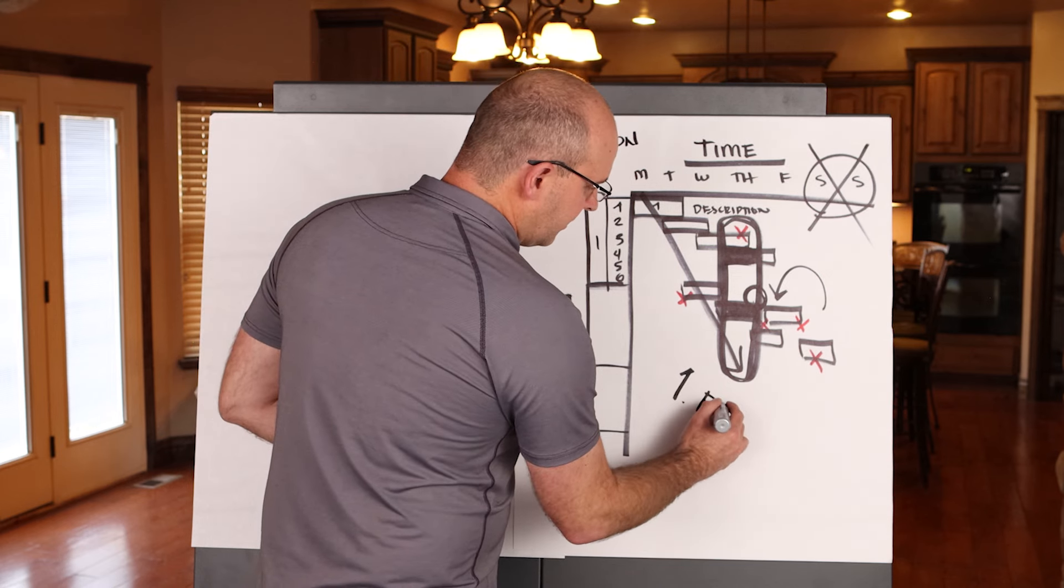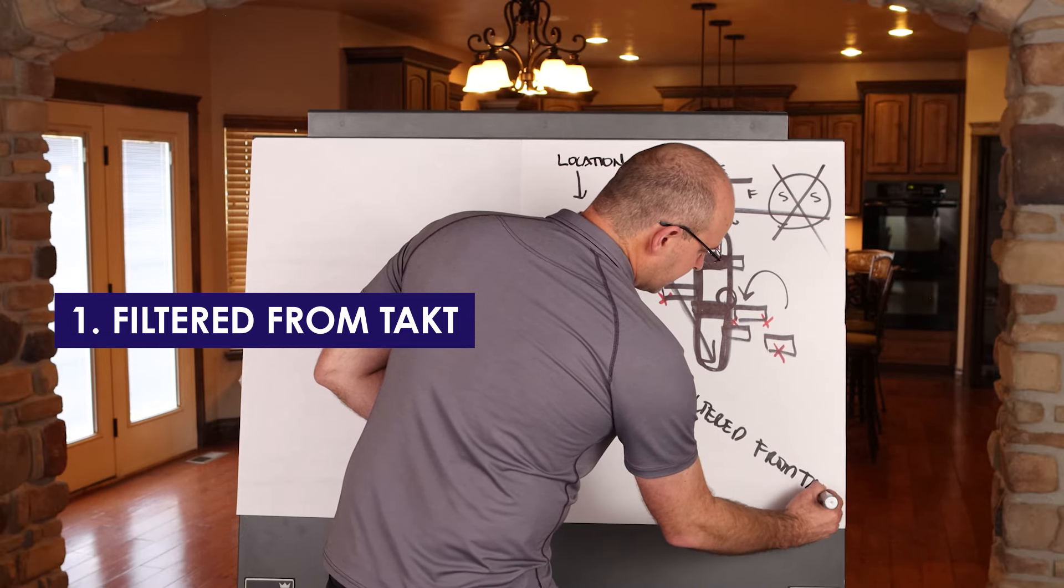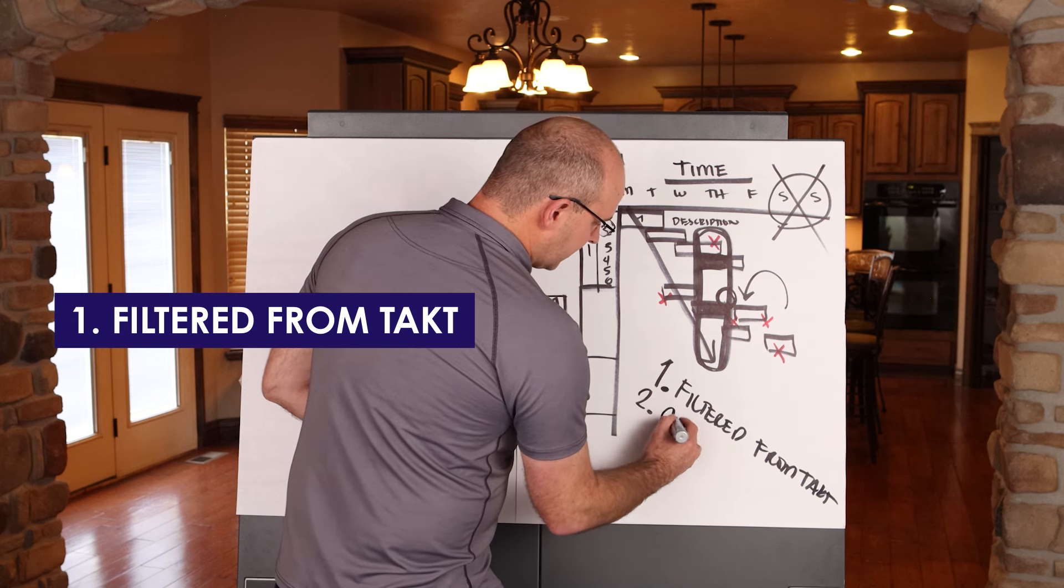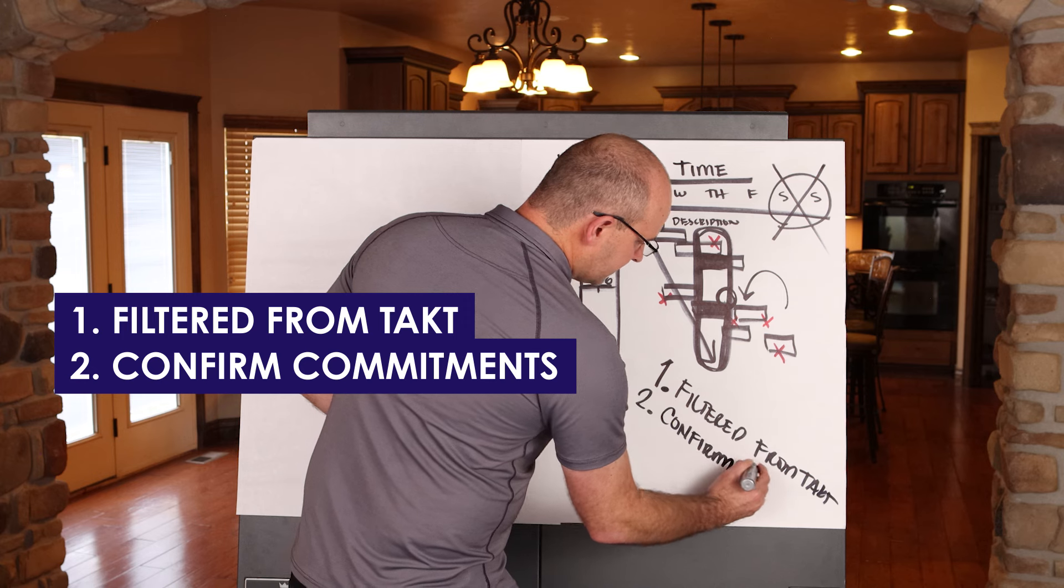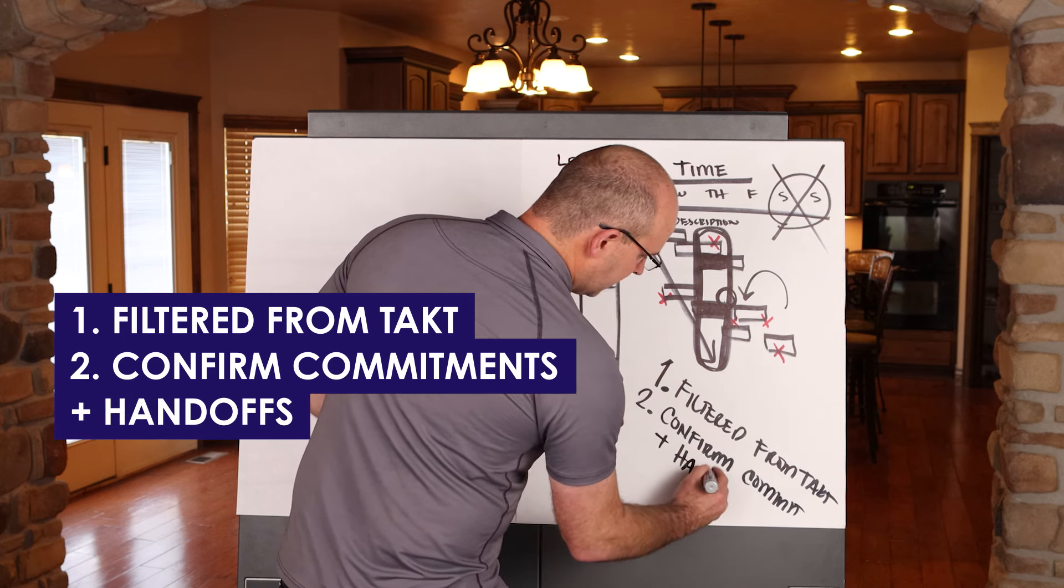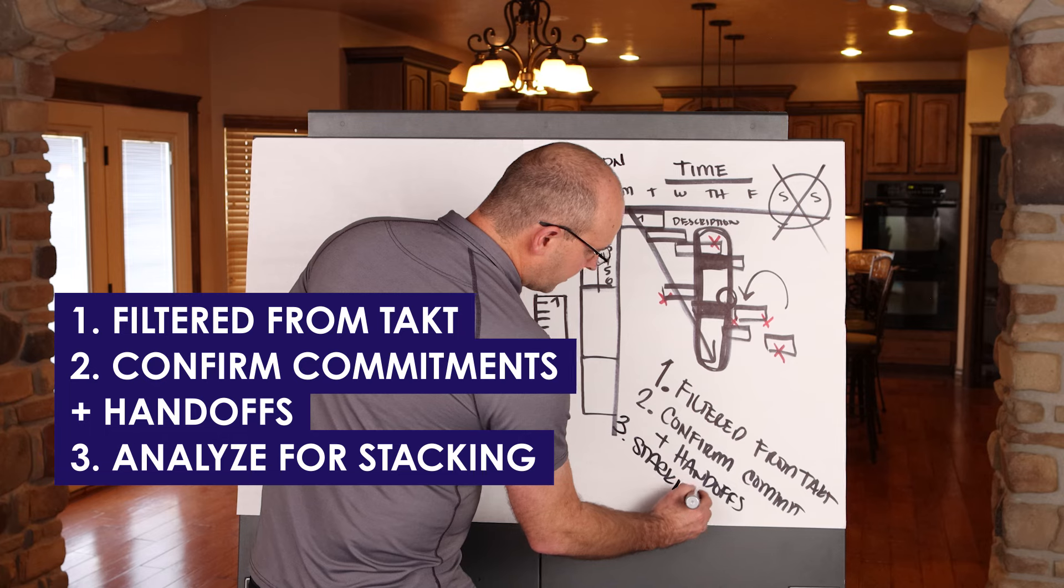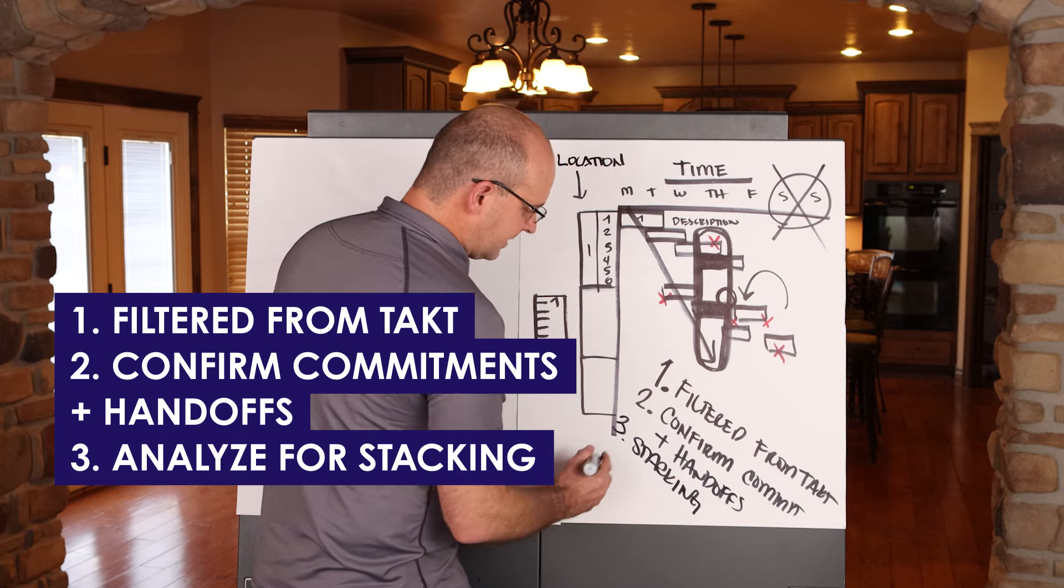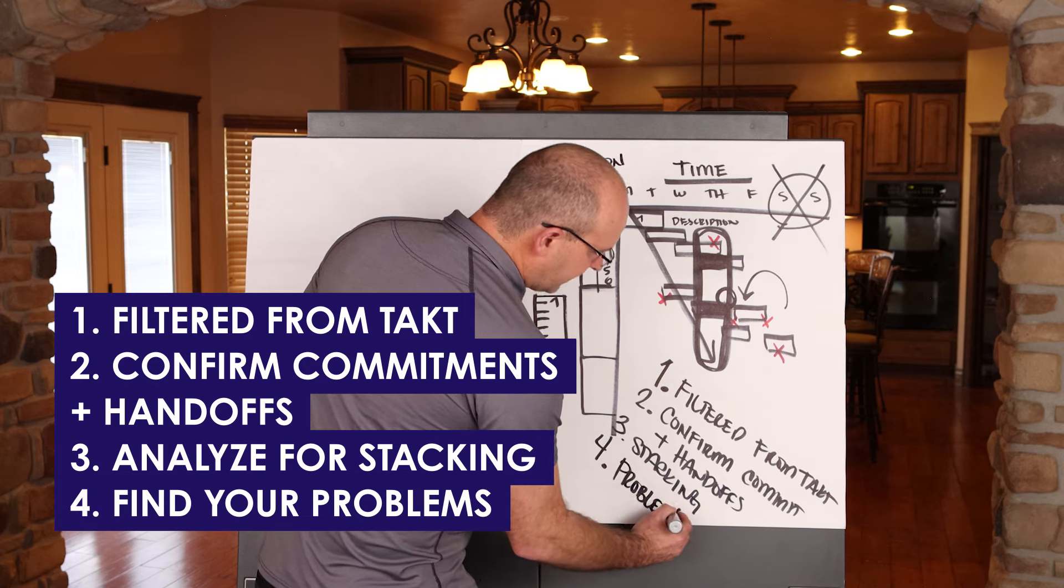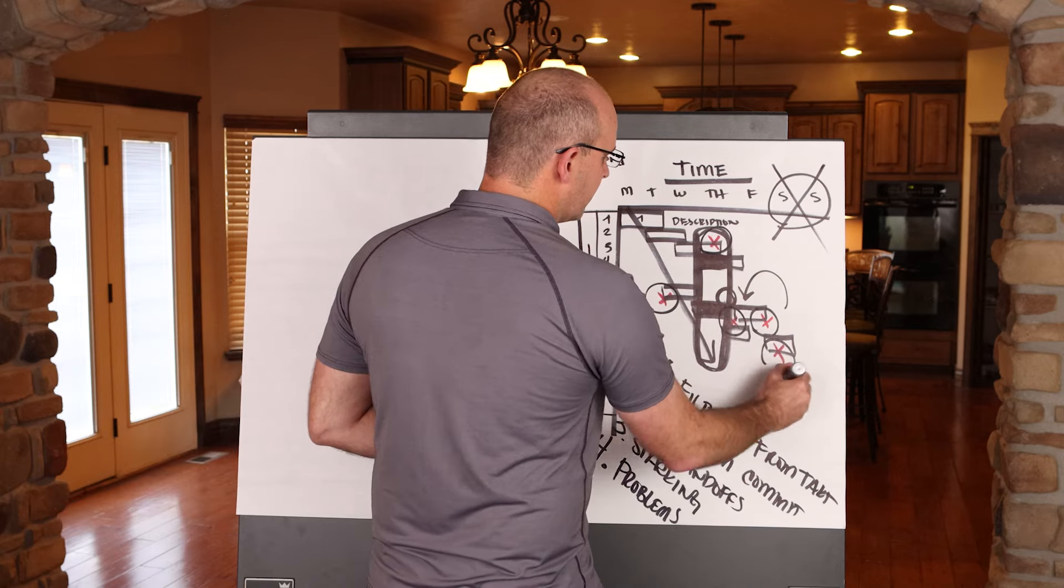So hopefully you're following this process. You've filtered it from tact. The second thing that you're going to do as a part of this process is you are going to confirm commitments, so I'm just going to write commit plus handoffs. You are going to analyze for stacking or burdening. Make sure that there's enough room to actually fit in these spaces. And number four, you're going to find your problems. When you find your problems, you will hopefully be able to solve those together as a collaborative team before they affect the work in the field.